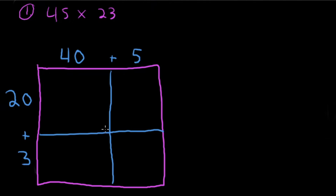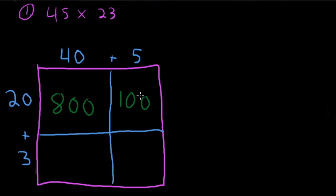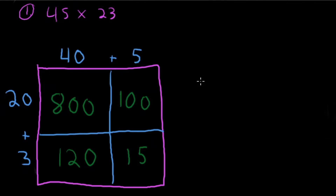Next, touch the numbers and do the multiplication. 20 times 40: 2 times 4 gives us 8, attach two zeros — that's 800. 20 times 5: 2 times 5 is 10, attach one zero — that's 100. On the bottom row, 3 times 40: 3 times 4 is 12, attach one zero — that's 120. Last section: 3 times 5 is 15. Notice I always touch the numbers — use this strategy!